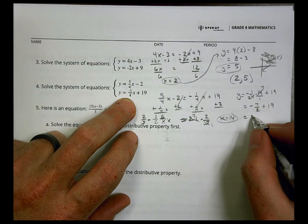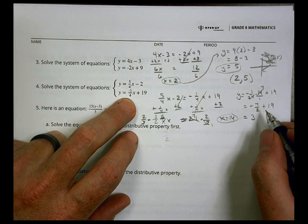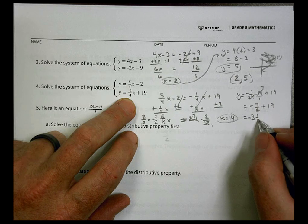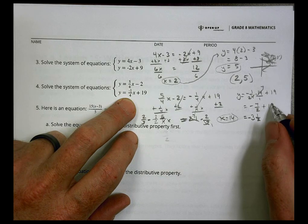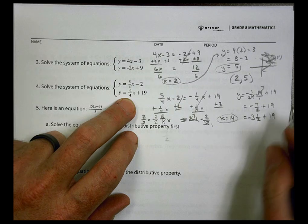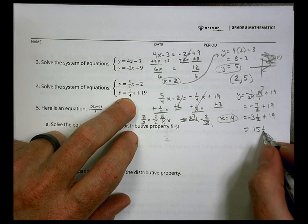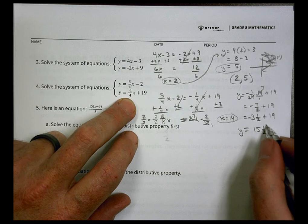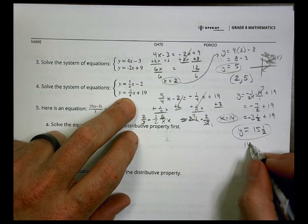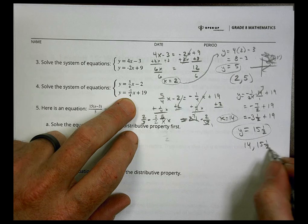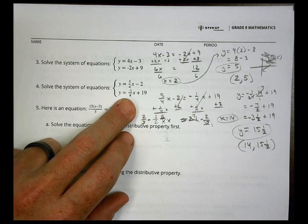Negative 7/2, if I want to change this into a mixed number, 2 goes into 7 three times, and we're negative 3 and a half, or 3.5. So now if I do 19 minus 3 and a half, I end up with 15 and a half, or 15.5 for y. So my solution would be (14, 15.5).